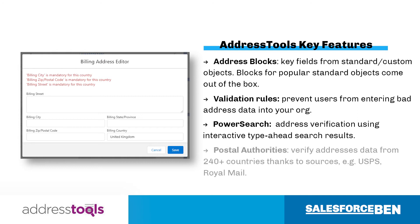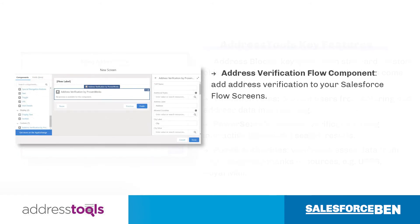Verify addresses in over 240 countries thanks to data from postal authorities such as USPS, Royal Mail, and more. And with the address verification flow component extension, you can add power search verification to your Salesforce flow screens.